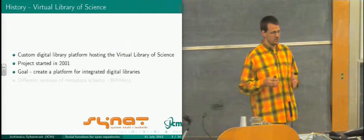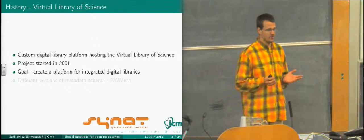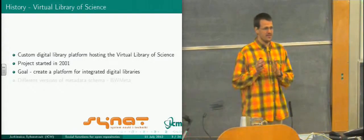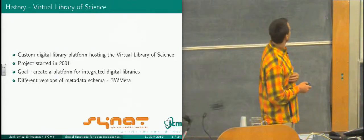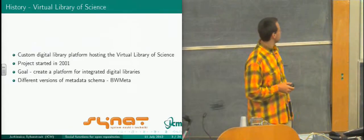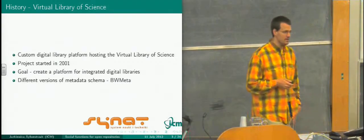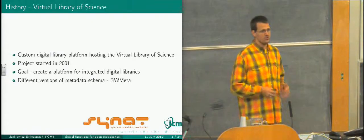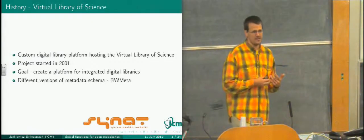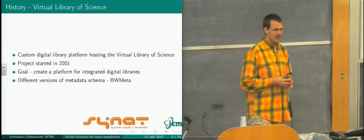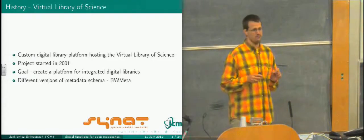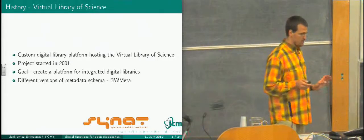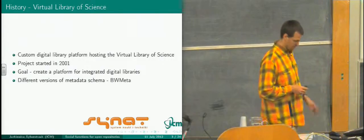Because ICM is processing licenses for Elsevier, Springer, and IEEE for all Polish institutions, we transfer a huge amount of money for this, but our position in negotiation is much stronger, because we are the only place they can sell it in Poland. In this project, we used different versions of our metadata schema, BWMeta. We were developing the system and changed the schema, so we got three or four versions. Now we call the current one BWMeta 2.